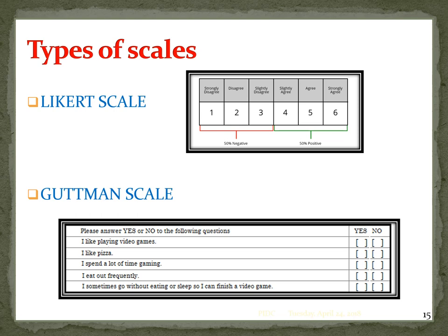Types of scales: there are two types — Likert scale and Guttman scale. In the Likert scale, strongly disagree is 1, disagree is 2, slightly disagree is 3, agree is 5, and strongly agree is 6. Either increasing or decreasing ranking is given.